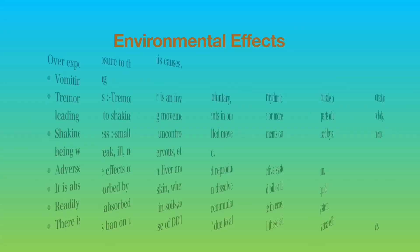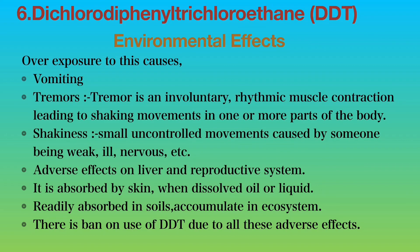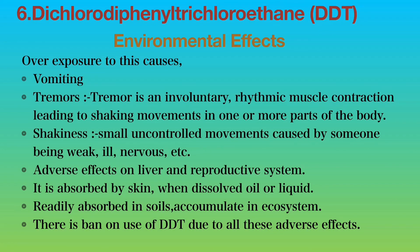The environmental effects of DDT: overexposure causes vomiting; tremors, which is an involuntary rhythmic muscle contraction leading to shaking movement in one or more parts of the body; and shakiness, small uncontrollable movements caused by someone being weak, ill, or nervous. It also has adverse effects on the liver and reproductive system. It is absorbed through skin when dissolved in oil or liquid, and is readily absorbed in soil and accumulated in the ecosystem. Due to all these adverse effects, there is a ban on the use of DDT.